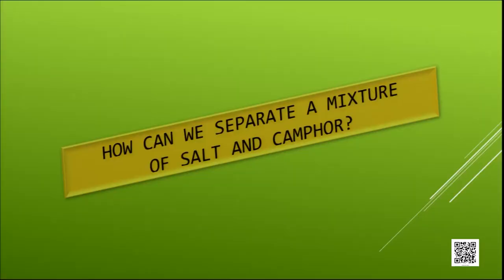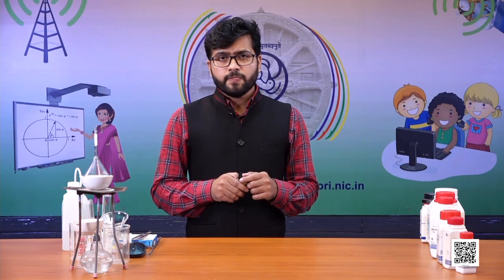Now, how can we separate a mixture of salt and camphor from each other? Here, both components are solid. Camphor is a sublimable solid — when you heat camphor, it gets directly converted into gaseous state. So the principle here is that one of the solids is sublimable and the other is not. To separate this type of mixture, we use the technique called sublimation.